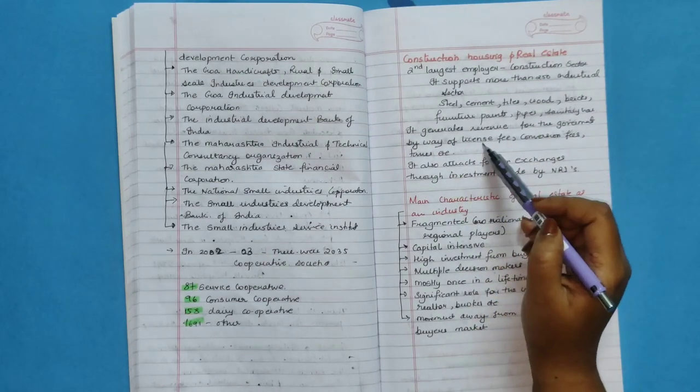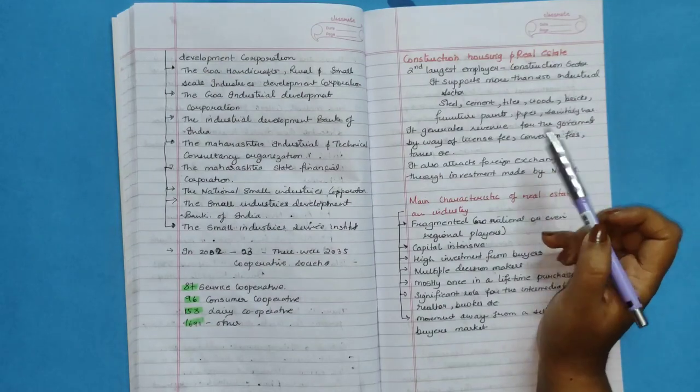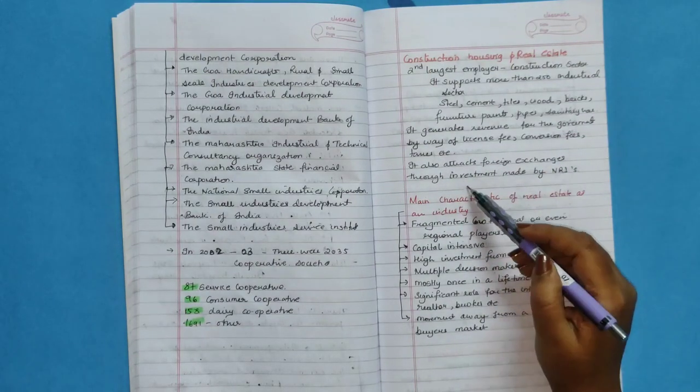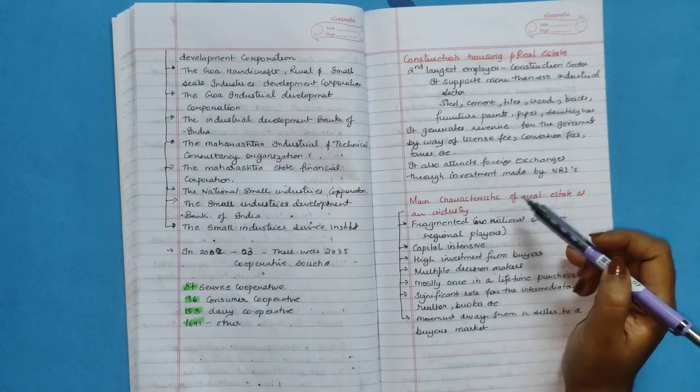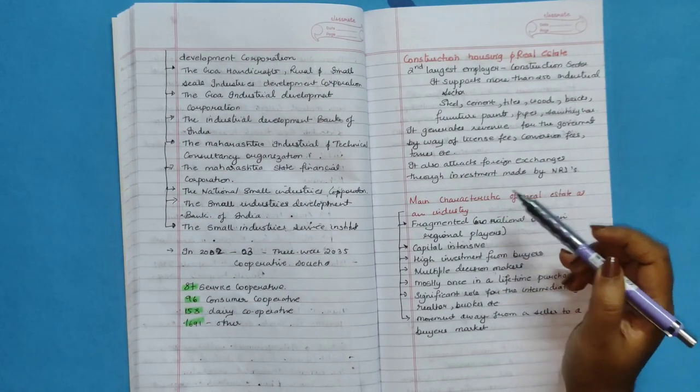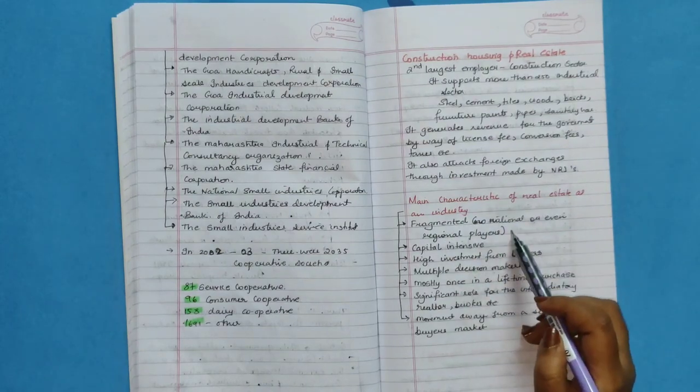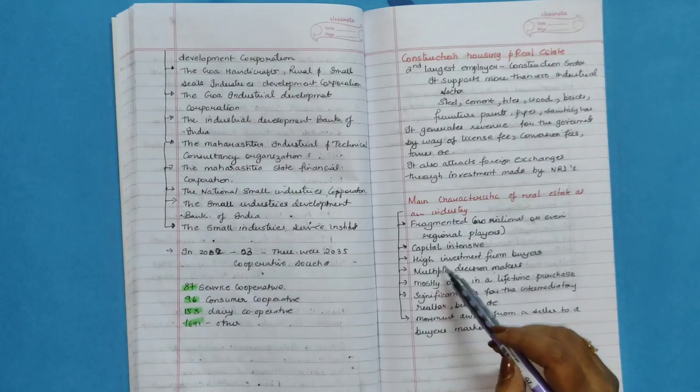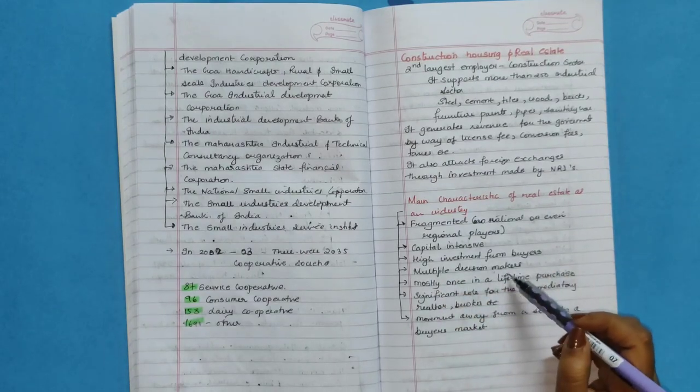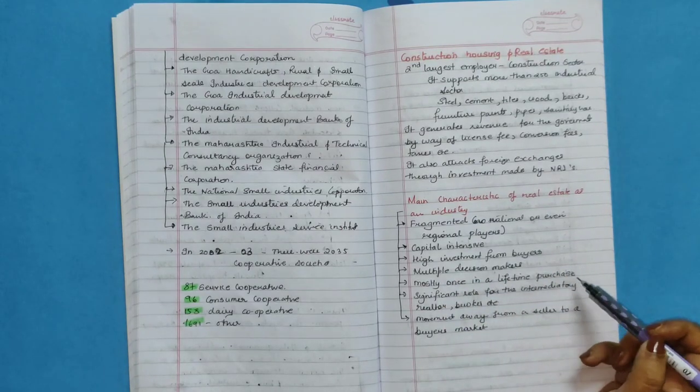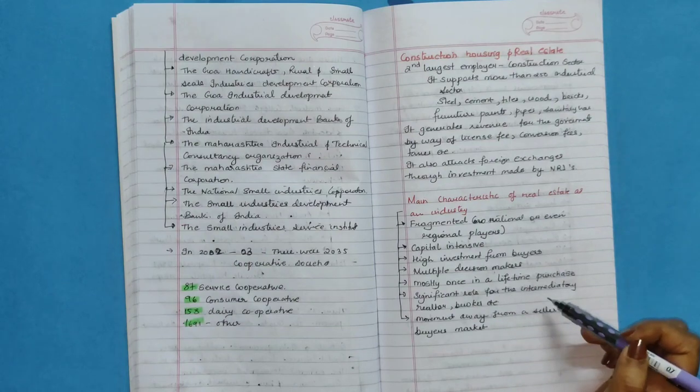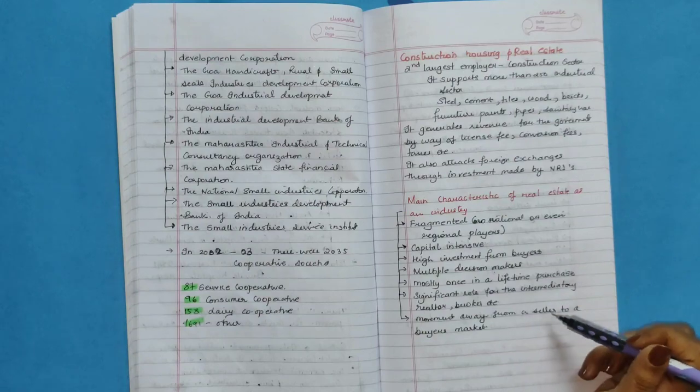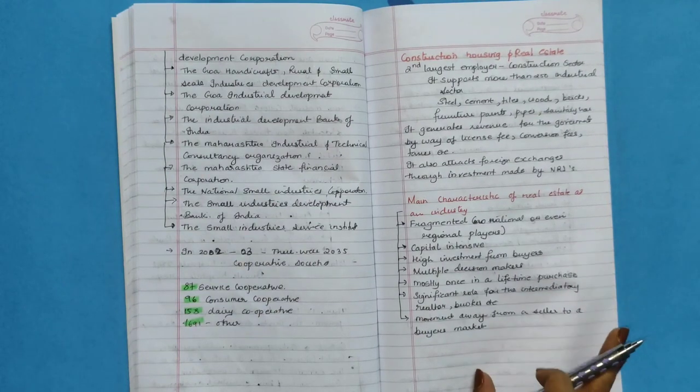It generates revenue for the government by the way of license fee, conversion fees, taxes, etc. It also attracts foreign exchanges through investment made by NRIs. Main characteristic of real estate industry: fragmented, national or even regional player, capital intensive, high investment from buyers, multiple decision makers, mostly once in a lifetime purchase, significant role for intermediary, realtor, broker, etc., movement away from a seller to buyer market.